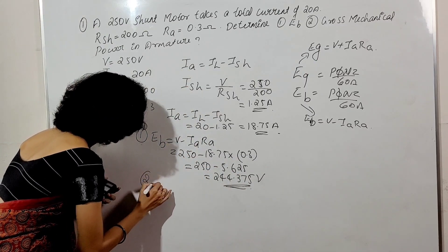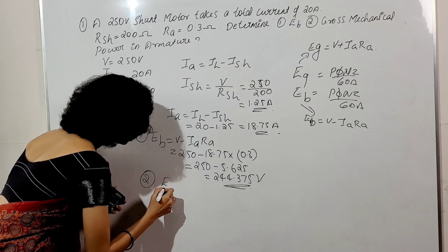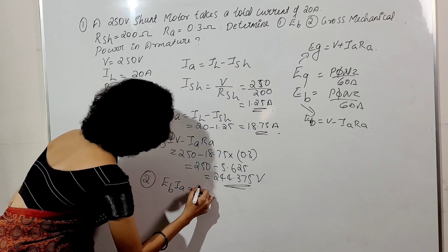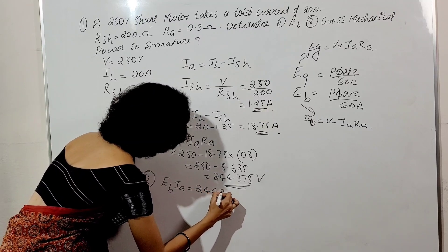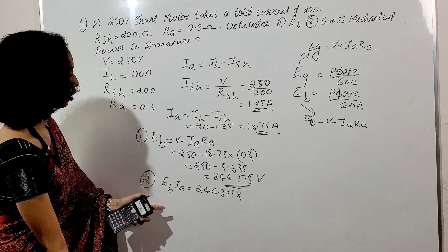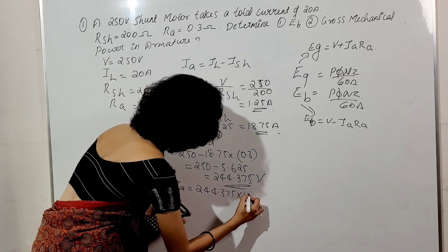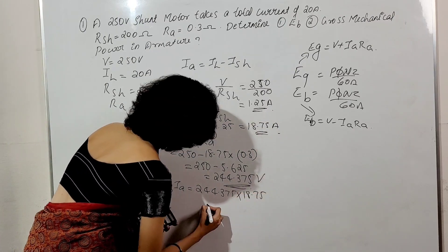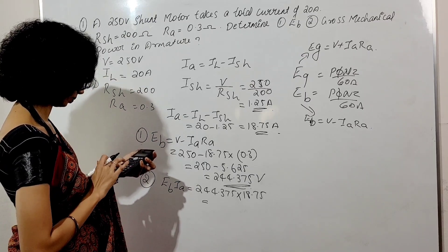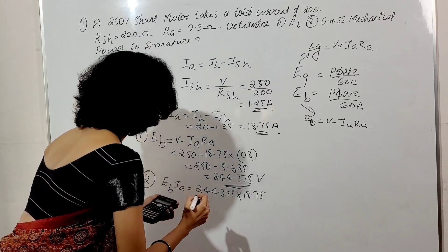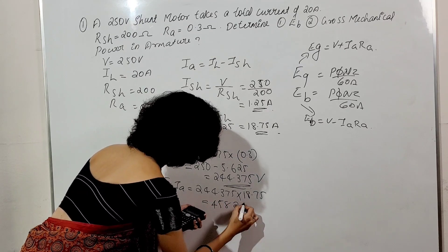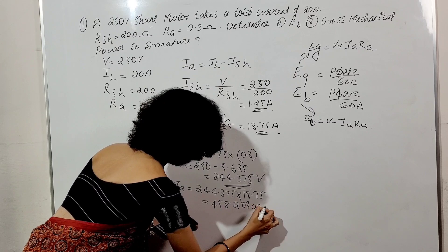Second question: gross mechanical power equals EB times IA. Mechanical power is equal to 244.375 multiplied by 18.75, which is equal to 4582.03 watts.